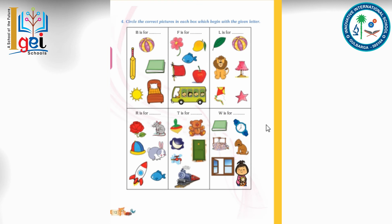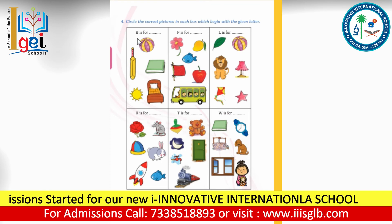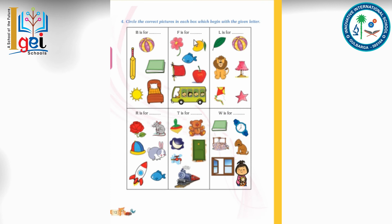See here — what you have to do is circle the correct picture that begins with the alphabet B. B for ball, circle it. B for bat, circle it. B for book, circle it. B for bed — all of these you have to circle.